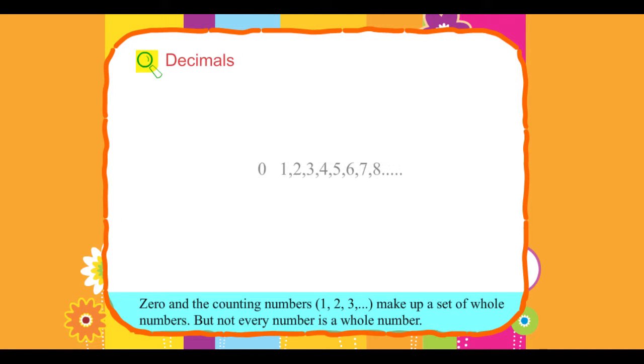Decimals. Zero and the counting numbers 1, 2, 3 make up a set of whole numbers. But not every number is a whole number.